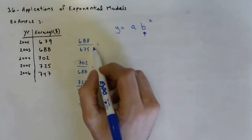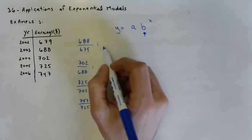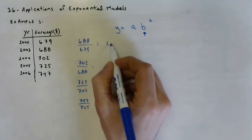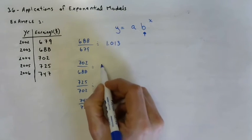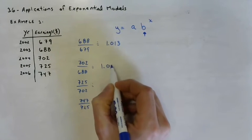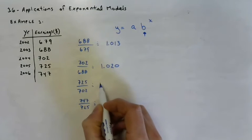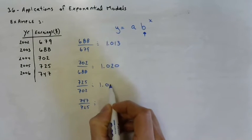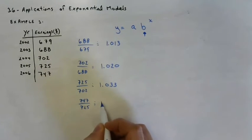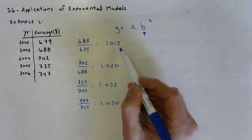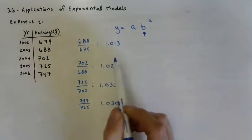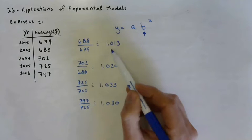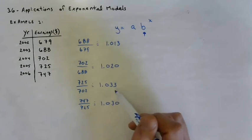So we can get a few ratios here. We can get 688 over 679. We can get 702 over 688. We can get 725 over 702. And we can get 747 over 725. Go ahead and punch each of those into your calculator and jot down the approximation.